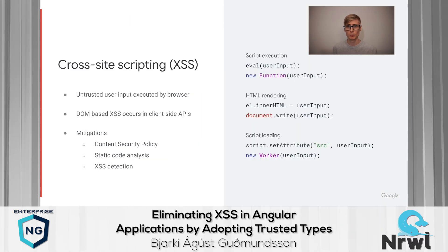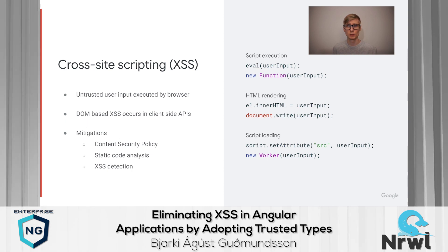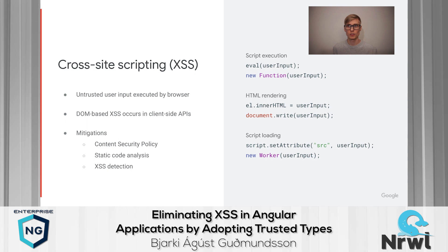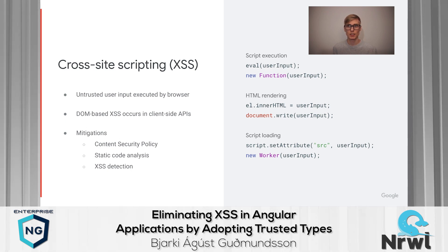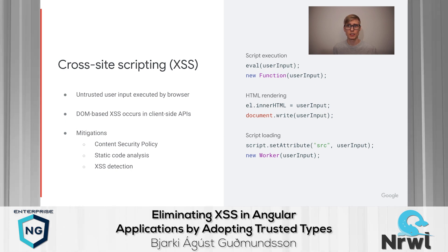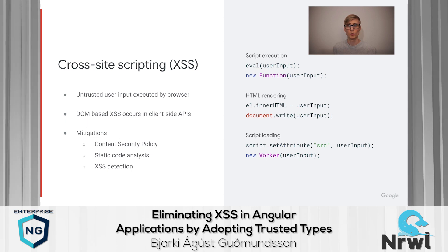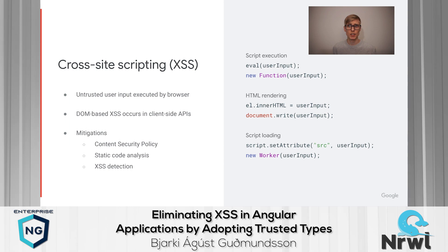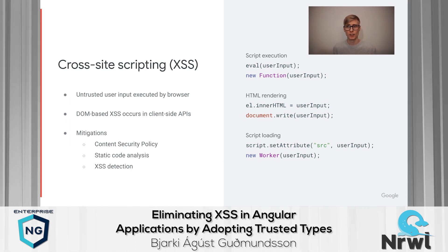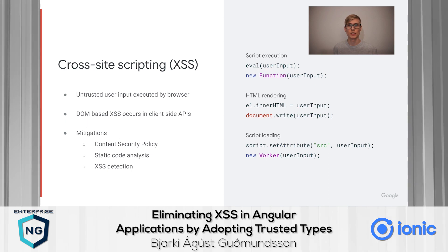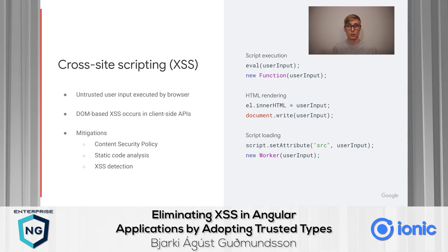Cross-site scripting vulnerabilities occur when a web application passes user input, which hasn't been escaped or sanitized, into an HTML or script context that the browser then interprets and executes. This can be serious, as an attacker may be able to leverage this to leak sensitive data from users or perform actions on their behalf. This can happen both because of unsafe server-side and client-side rendering. Client-side, or DOM-based XSS, which we are going to focus on, occurs when the application passes user input to one of the dangerous DOM APIs, which we call injection sinks.